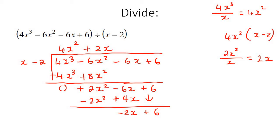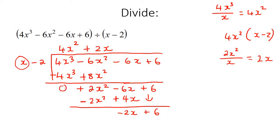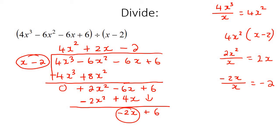We bring the positive 6 down and start the process again. The highest powers are x and negative 2x. We divide: negative 2x divided by x gives us negative 2. So we put negative 2 at the top. Then we take that negative 2 and multiply it with x minus 2, giving us negative 2x plus 4. We switch the signs — positive and negative — the 2x's cancel out, and 6 minus 4 is 2. That is our remainder.